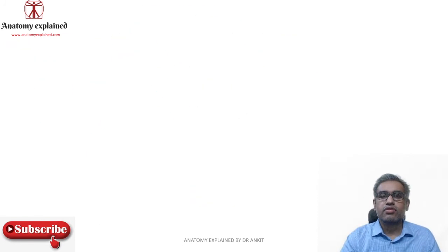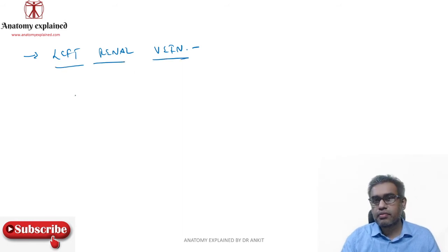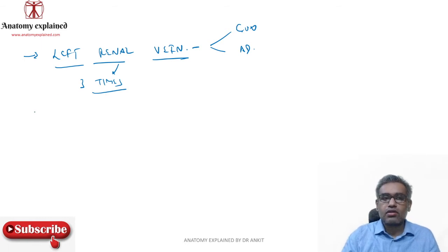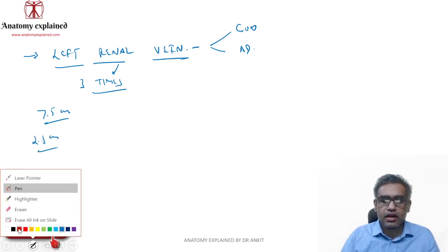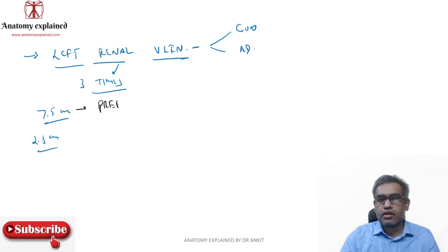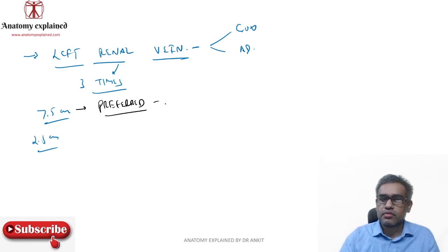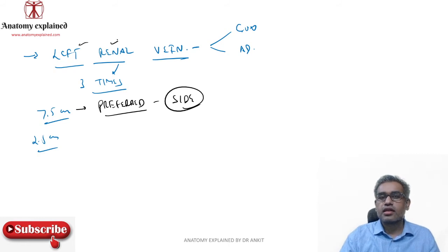A few important points about the renal veins: the left renal vein also receives the gonadal and adrenal veins as tributaries. The left renal vein is around three times the length of the right — approximately 7.5 centimeters (three inches), while the right renal vein is about 2.5 centimeters. Because of the longer left renal vein, the left kidney is the preferred side for live donor nephrectomy, as there is more vein length to work with for fixing it in the recipient.